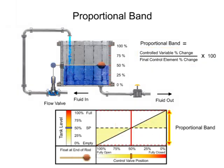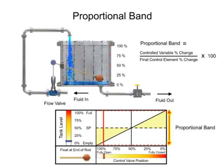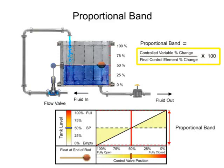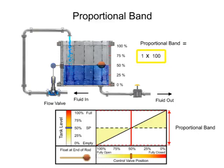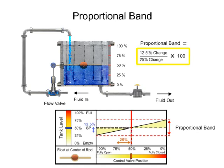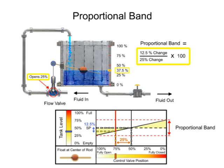The width of the proportional band determines how much of a controlled variable change is required to cause the final control element to move by a determined amount. By placing the float on the end of the rod, the fluid level has to change 100% to cause the final control element to change 100%. By placing the float at the center of the rod, the fluid level has to change 12.5% to cause the final control element to change 25%. The width of the proportional band is reduced by half.